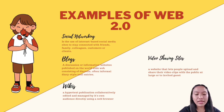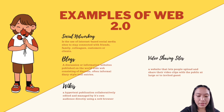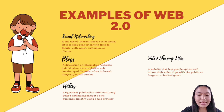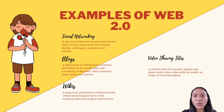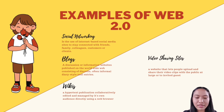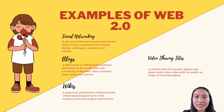The next example is blogs. A blog is a discussion or informational website published on the World Wide Web. It consists of discrete, often informal, diary-style text entries. The best examples are WordPress and Tumblr. We also have wikis — a hypertext publication collaboratively edited and managed by its own audience directly using a web browser.